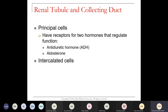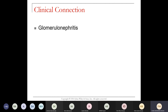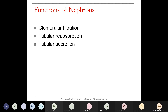There are principal cells that are sensitive to two hormones: aldosterone and antidiuretic hormone (ADH). There are also intercalated cells. If there is an infection or inflammation of the glomerulus, we call that glomerulonephritis. The functions of the nephrons are to filter the glomerular contents, reabsorb water and other ions that the body needs or that may be in low amounts, and then secrete whatever the body doesn't need.